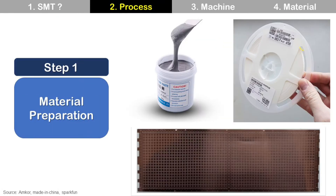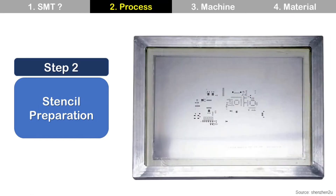Material preparation is to prepare solder paste, SMD, and package substrate — like a laminate substrate. Stencil preparation is to make stencil apertures based on substrate design, and we also need to decide other parameters like stencil thickness, stencil fabrication method, and so on. The stencil is a tool for solder paste printing, and is made of a metal sheet and frame.